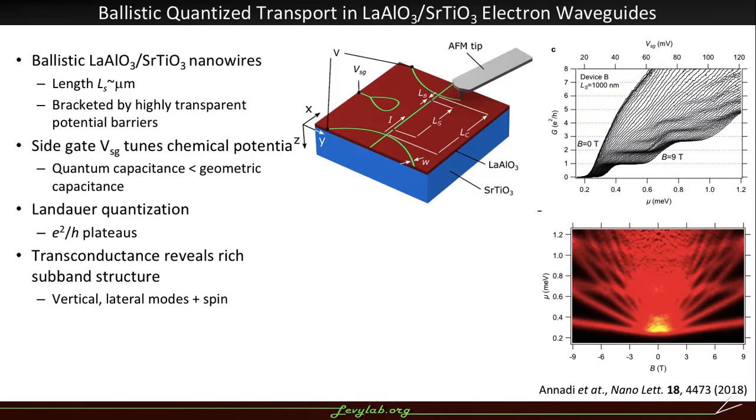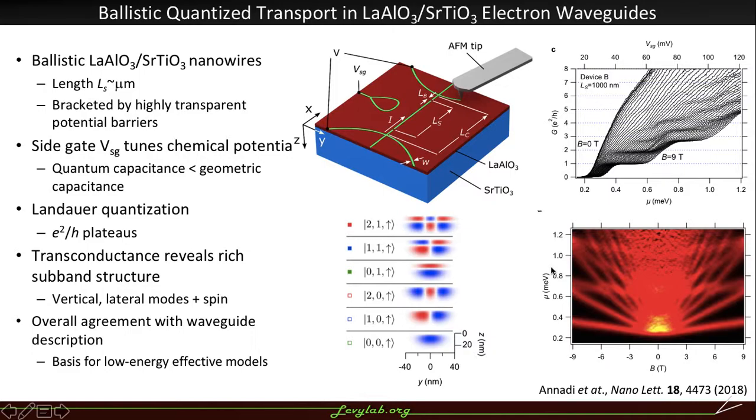In the conductance we see highly quantized plateaus at integer values of e squared over h. And if we look at the transconductance, the derivative of these curves, we see that it reveals this rich subband structure where we have vertical and lateral modes of confinement. This is in very good overall agreement with a waveguide description.